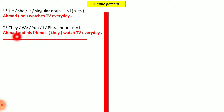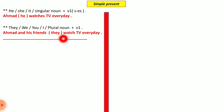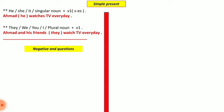For example: 'Ahmed and his friends' — when we add 'and his friends,' the subject becomes plural, so if we replace them with a pronoun, we use 'they.' The verb changes from 'watches' to 'watch': 'Ahmed and his friends watch TV every day.'